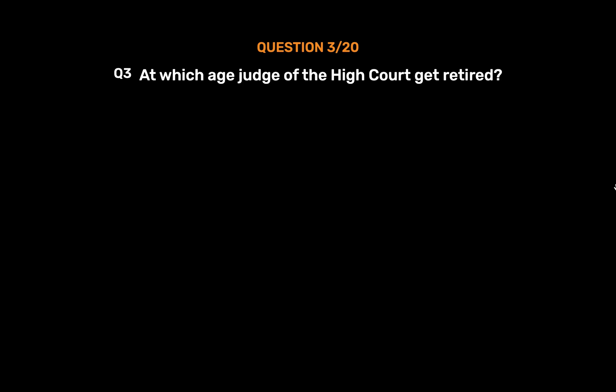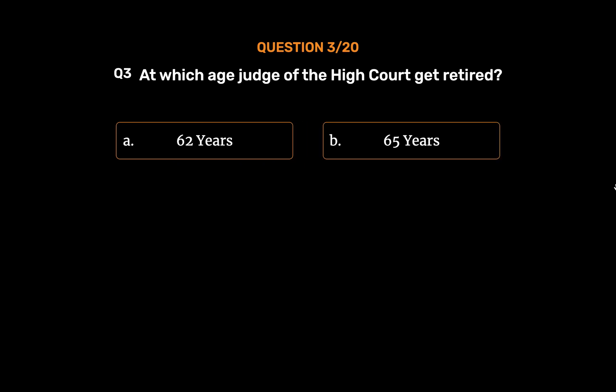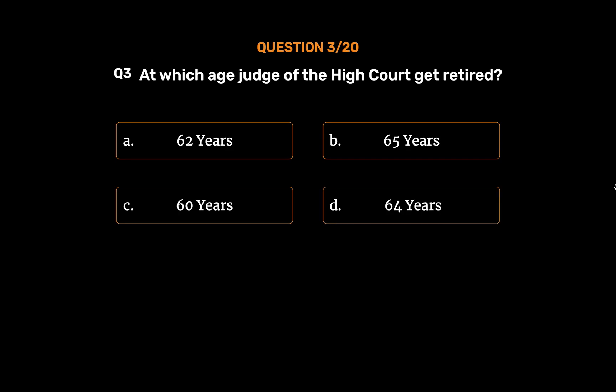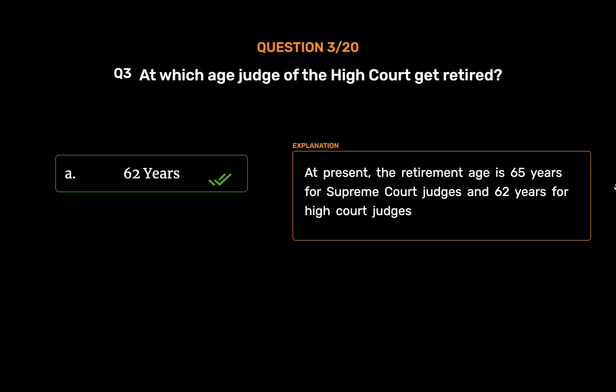Question No. 3. At which age does a judge of the High Court get retired? Option A: 62 Years. Option B: 65 Years. Option C: 60 Years. Option D: 64 Years. The correct answer is Option A: 62 Years. At present, the retirement age is 65 Years for Supreme Court Judges and 62 Years for High Court Judges.